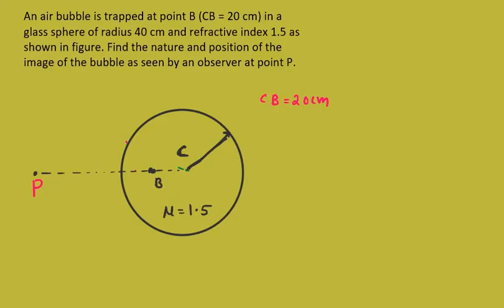The air bubble is at point B, and an observer is observing from point P. If you consider a light ray from point B, the light ray will be coming out and after striking the surface it will undergo refraction. To get the refracted ray, we will draw a normal which will meet at the center of curvature C.